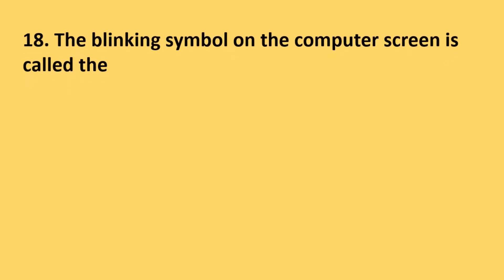Question number 18: The blinking symbol on the computer screen is called - options are mouse, hand, light and cursor. The correct answer is option D, cursor.